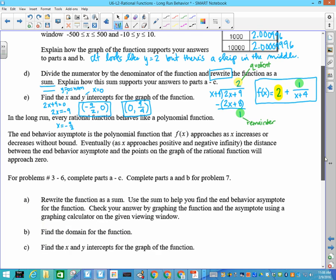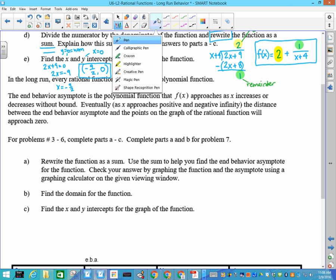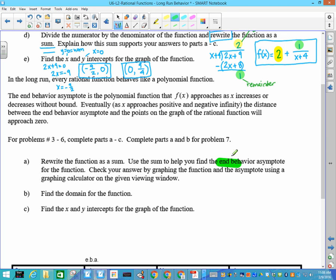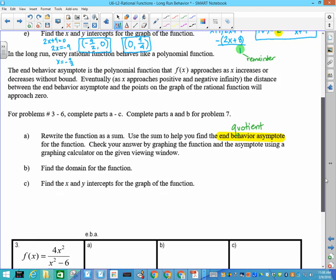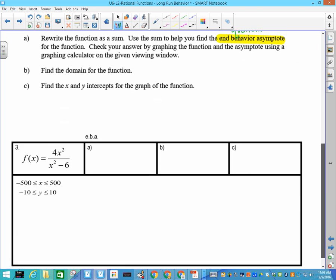Okay, so that was building up to how are we finding these end behavior asymptotes. So now you're going to actually go through the mechanics of doing it. I'm going to do the first example for you so you know what you're supposed to be doing. As I said, people kind of already figured out that whatever that quotient was we got right here, this quotient turned out to be our end behavior asymptote. But in each problem, you're going to rewrite the function as a sum, use that sum to help you find your end behavior asymptote, check your answer by graphing the function and the asymptote using a graphing calculator in the viewing window.